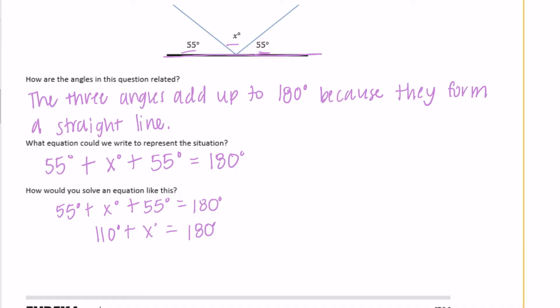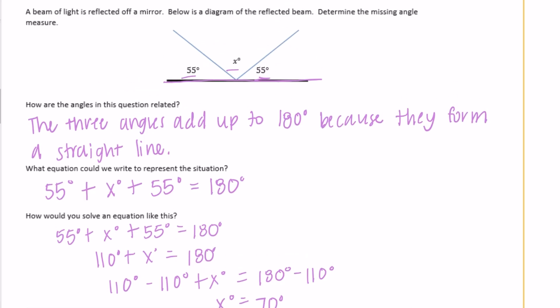Now we can get rid of the 110 degrees by subtracting. So 110 degrees minus 110 degrees plus x degrees: x degrees equals 180 degrees minus 110 degrees. So x degrees is equal to 180 minus 110, which is 70 degrees. So this right here would be 70 degrees.